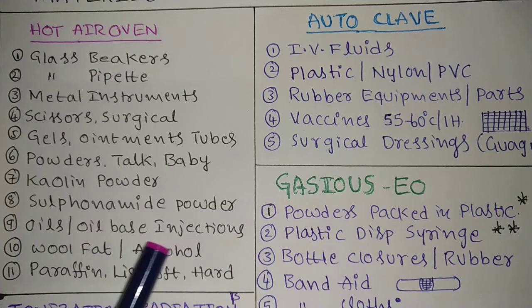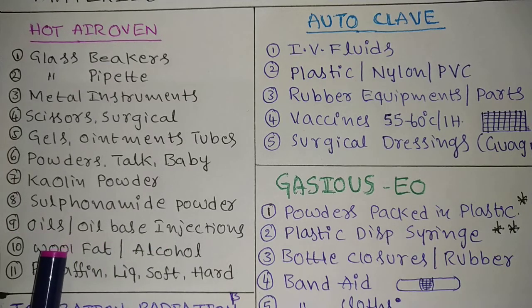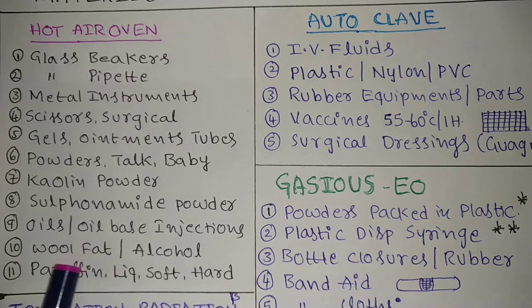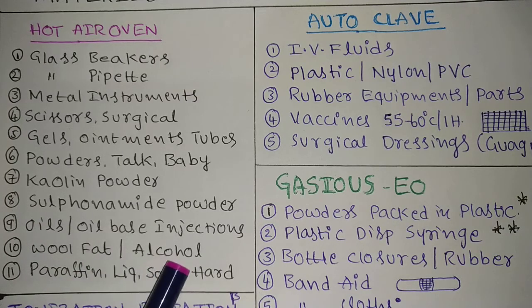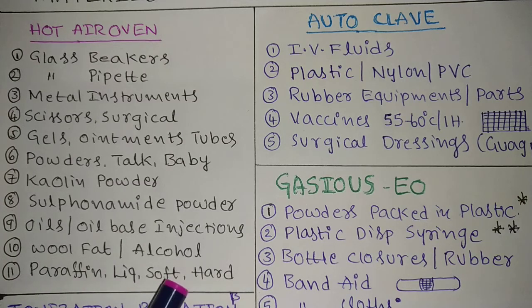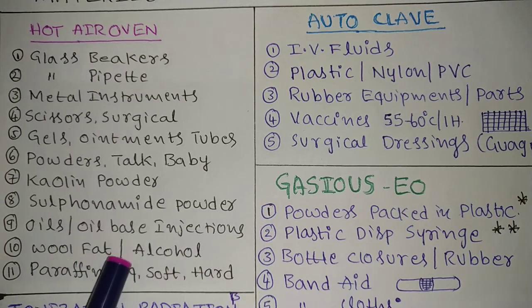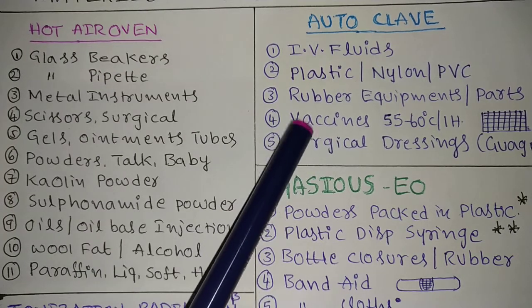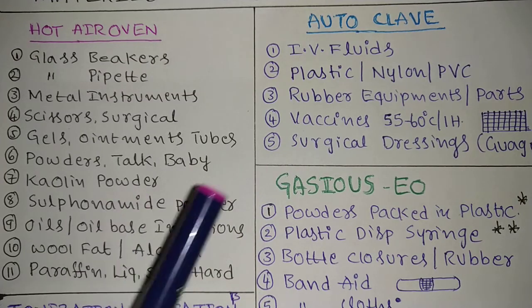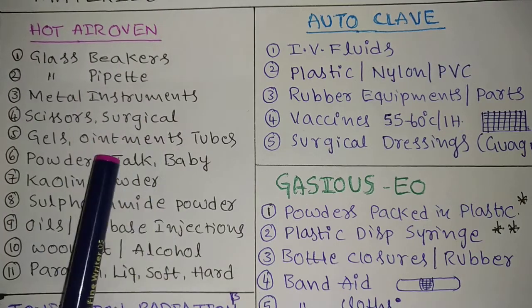Next are oils — oil-based injections, any type of oil items, wool fat, alcohol, paraffin (liquid paraffin, soft paraffin, hard paraffin) — all these oil items must use only the hot air oven. If oil absorbs moisture, there is a chance of emulsion formation. So do not go for autoclave; use the hot air oven for all oil-based items.